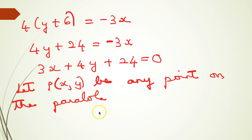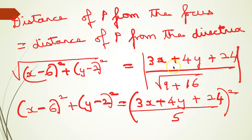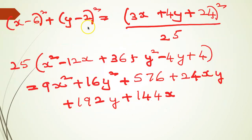Let P(x, y) be any point on the parabola. Distance of P from the focus equals distance of P from the directrix. Distance from focus (6, 2) is √[(x - 6)² + (y - 2)²]. Distance from directrix 3x + 4y + 24 = 0 is |3x + 4y + 24| / √(9 + 16). Squaring both sides: (x - 6)² + (y - 2)² = (3x + 4y + 24)² / 25.